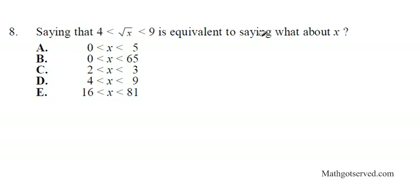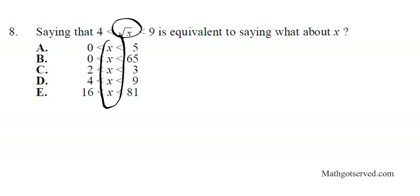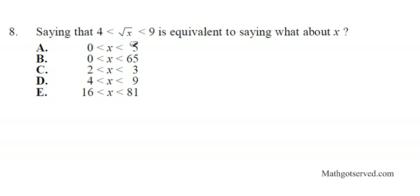Question 8 says that 4 is less than the square root of x, which is less than the square root of 9 — what does this say about x? The answer options don't have a square root, so we need to get our expression into a form similar to the answer choices by getting rid of the square root.